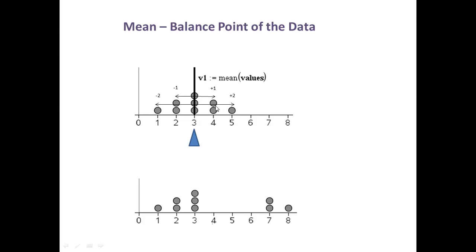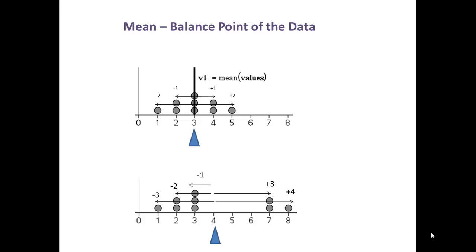Now suppose we took the two values at 4 and moved them to 7, and the one value at 5 and moved that to 8. What would that do to the position of our balance point? The balance point here would be 4. Three data values are one unit below the mean of 4, two data values are two units below, and one data value is three units below — a total of 10 below the mean. To offset that, two data values are three units above the mean and one is four units above, for a total of 10 above and 10 below the mean.